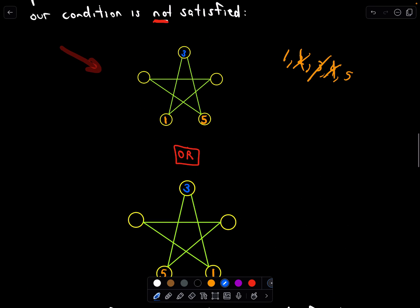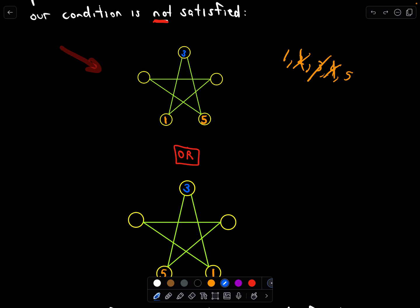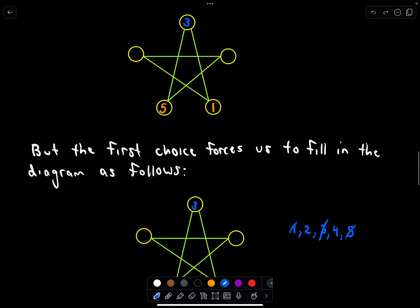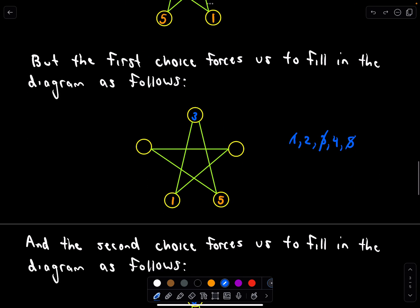But notice if we look at this first diagram, we've got the 3 at the top and the 1 at the bottom left and the 5 at the bottom right. What is that forced to happen? Well, if that happens, notice now in this circle I couldn't have a 2 because if there's a 2 there, it would violate our condition. So that tells me that the 4 has to go here, and by default the 2 has to go here. And notice this diagram wouldn't satisfy that condition that we wanted.